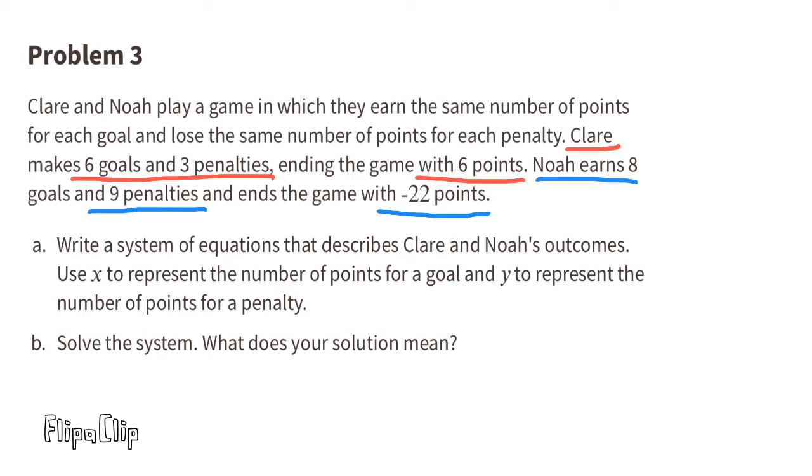Problem number 3. Claire and Noah play a game in which they earn the same number of points for each goal, and lose the same number of points for each penalty. Claire makes 6 goals and 3 penalties, ending the game with 6 points. Noah earns 8 goals and 9 penalties, and ends the game with negative 22 points. A. Write a system of equations that describes Claire and Noah's outcomes. Use X to represent the number of points for a goal, and Y to represent the number of points for a penalty.